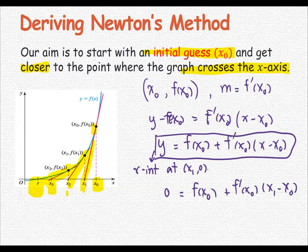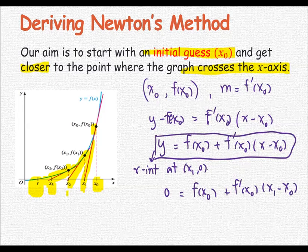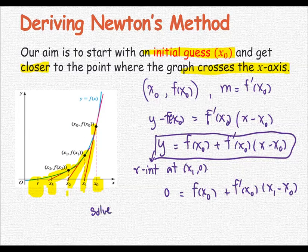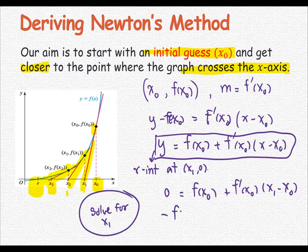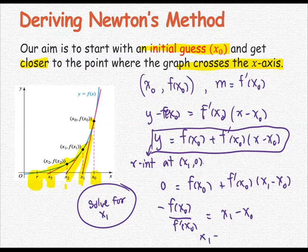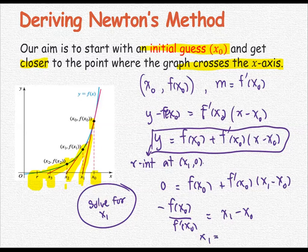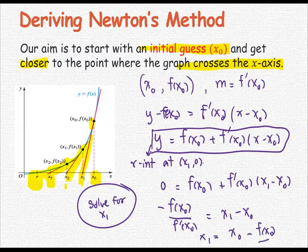Since we are looking for the x-intercept, we solve for x₁. Subtracting f(x₀) from both sides and dividing by f'(x₀), we get x₁ - x₀. Therefore, the equation for x₁ is x₁ = x₀ - f(x₀)/f'(x₀).